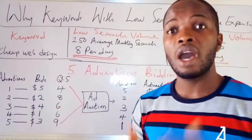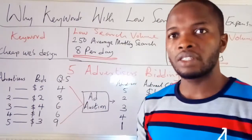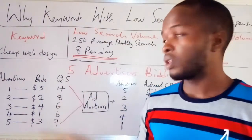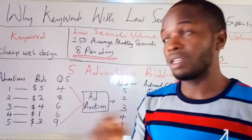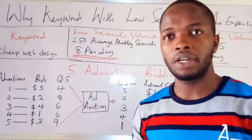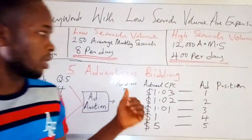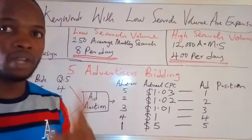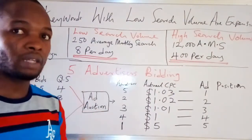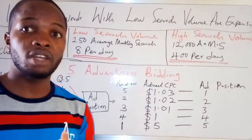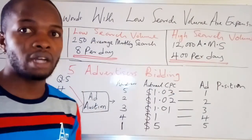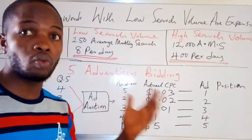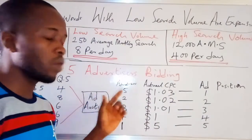Google determines which advertiser appears at the very top of the search results and which appears at the bottom, taking into consideration several factors — bids, quality scores, and so on. Since we're assuming quality score is the major determinant of who wins the auction, advertiser number five, who has a quality score of 9 and a bid of $3 per click, wins the auction and appears at the top of the search results.